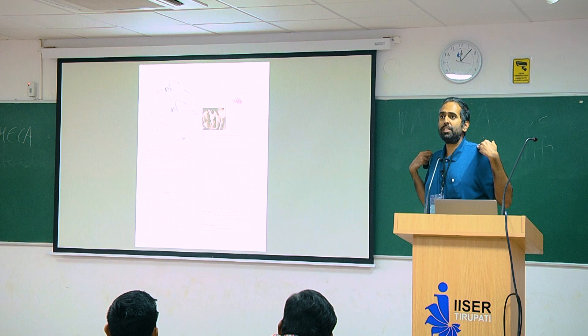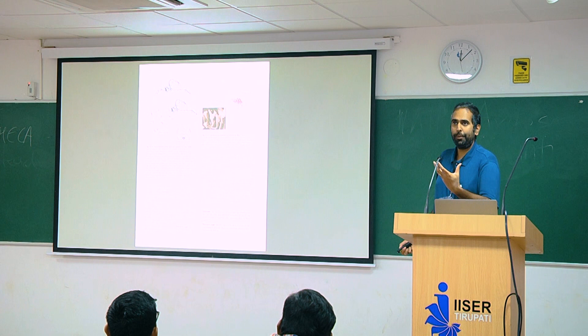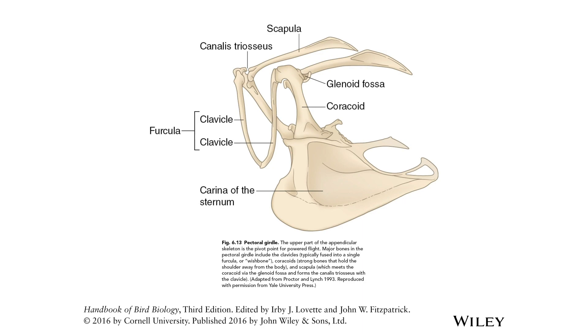The bird's sternum is vastly enlarged — this whole thing is the sternum of a bird. It's much larger than our own sternum, and it has in addition a big ridge that protrudes outwards.